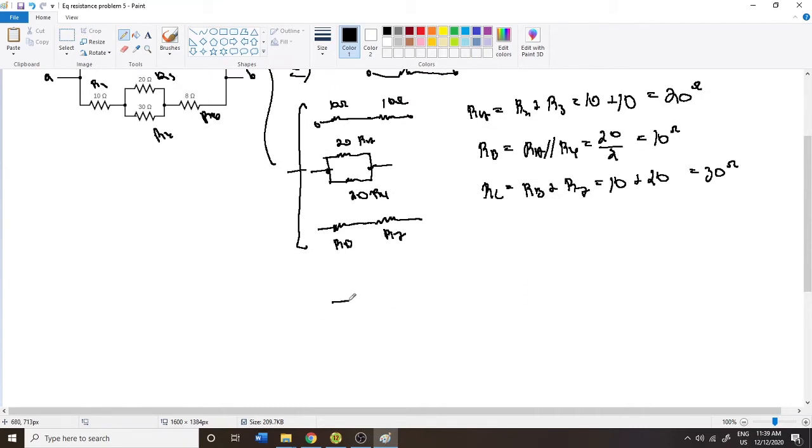So we have two resistors in parallel, R5 and R6, and they are 20 and 30. Okay, so such that RD is equal to R5 in parallel with R6, which is equal to 20 in parallel with 30.